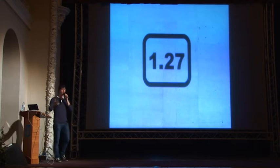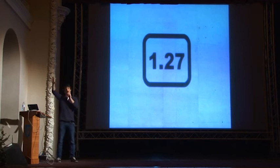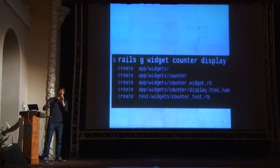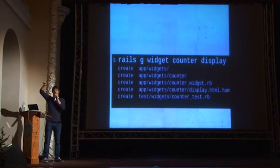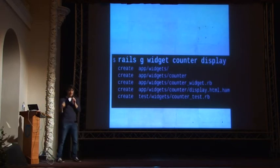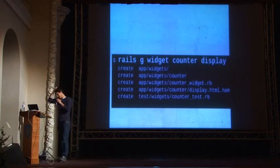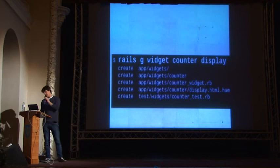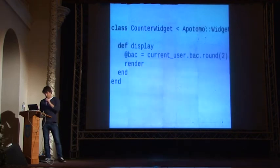What should happen now is that the graph should update and the counter should update. So in the next step, I'm going to implement the counter widget — the one showing blood alcohol concentration in the right corner. I use my generator again, this time calling it 'counter'. It will create the counter widget class, the standard view, and the standard test. You can do great testing in Apodomo, but I won't talk about that today.